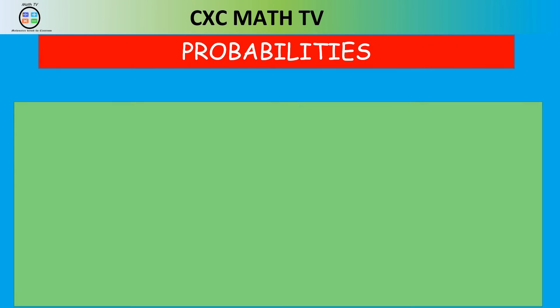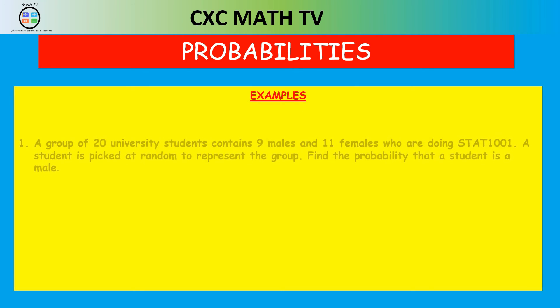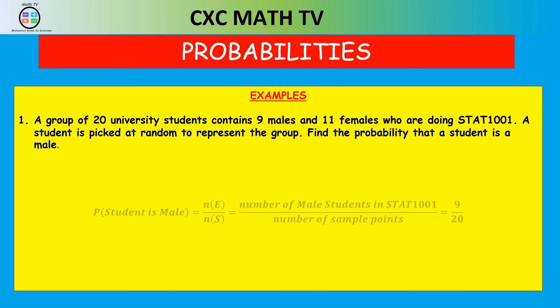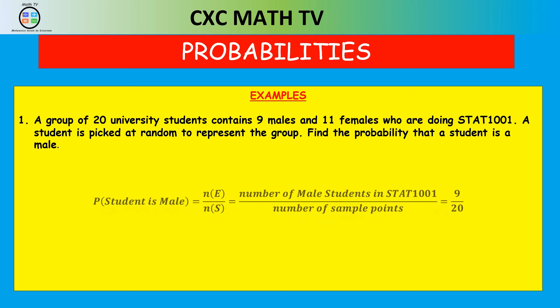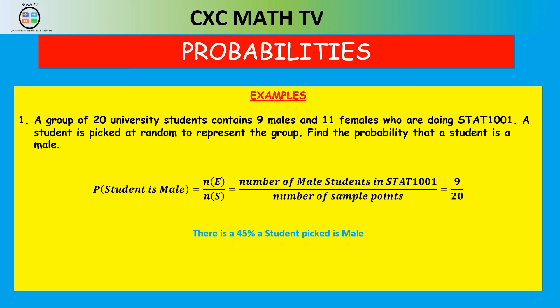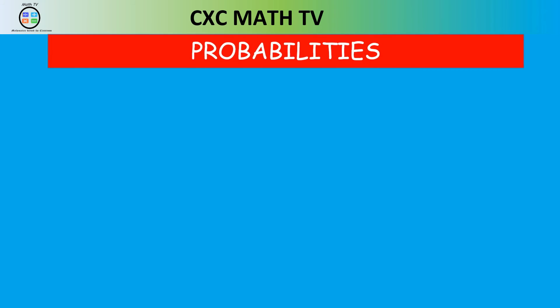For the second example: a group of 20 university students contains nine males and 11 females doing Statistics 1001. A student is picked at random to represent the group. The probability that the student is male equals the number of male students divided by the total number of students: 9/20. So there is a 45% chance of picking a male.